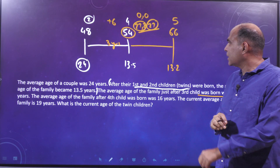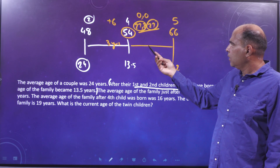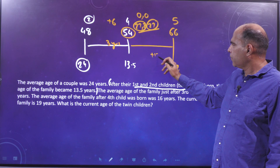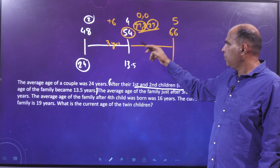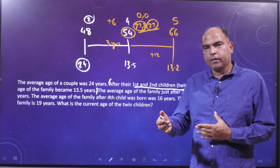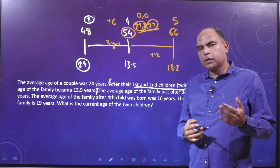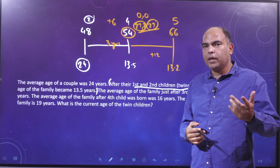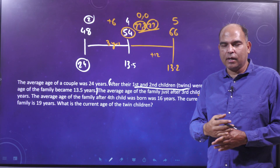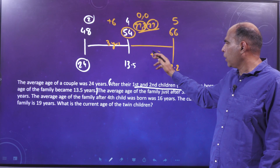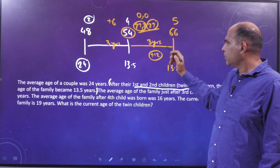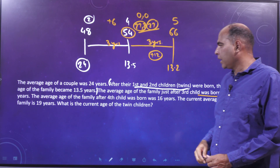The total age went from 54 to 66, an increase of 12. Since four people's ages were increasing, and 4 times 3 equals 12, this timeline segment is also 3 years. So another 3 years elapsed between the twins' birth and the third child's birth.